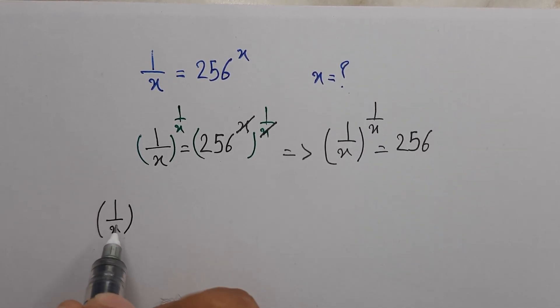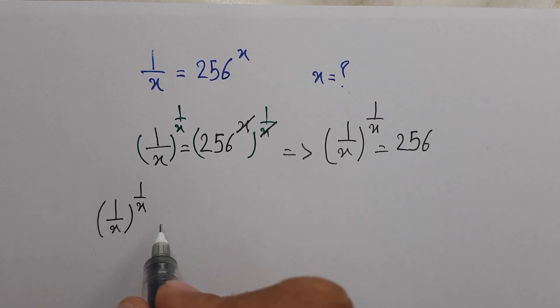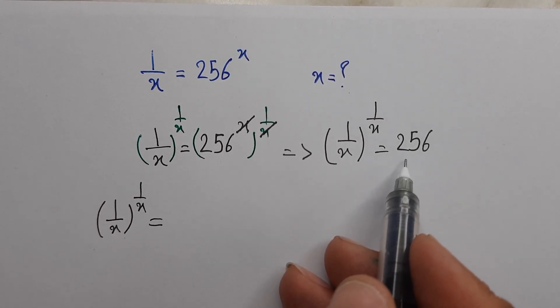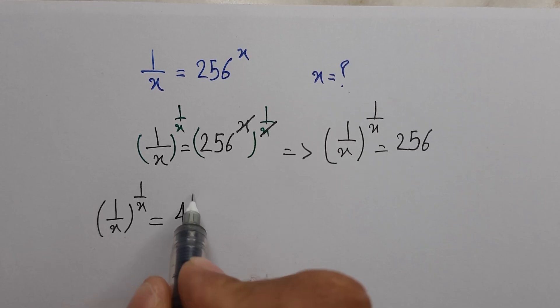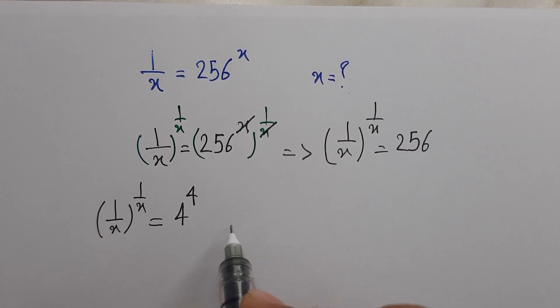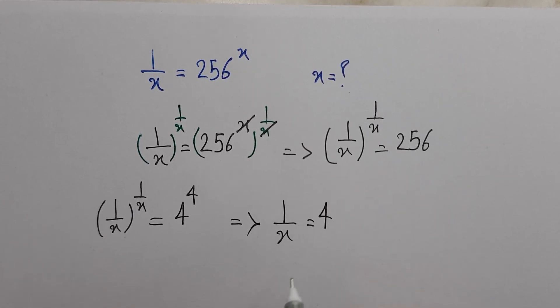Left side 1 over x power 1 over x equals 256, which can be written as 4 power 4. So here we have 1 over x is 4.